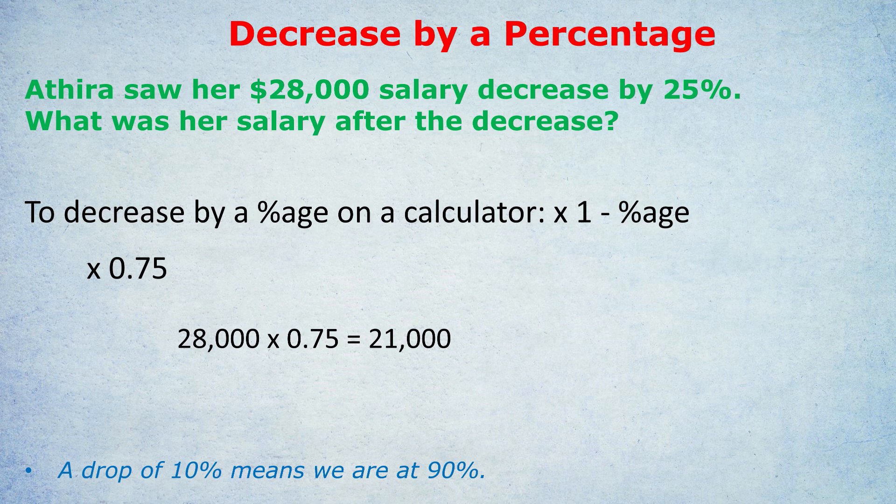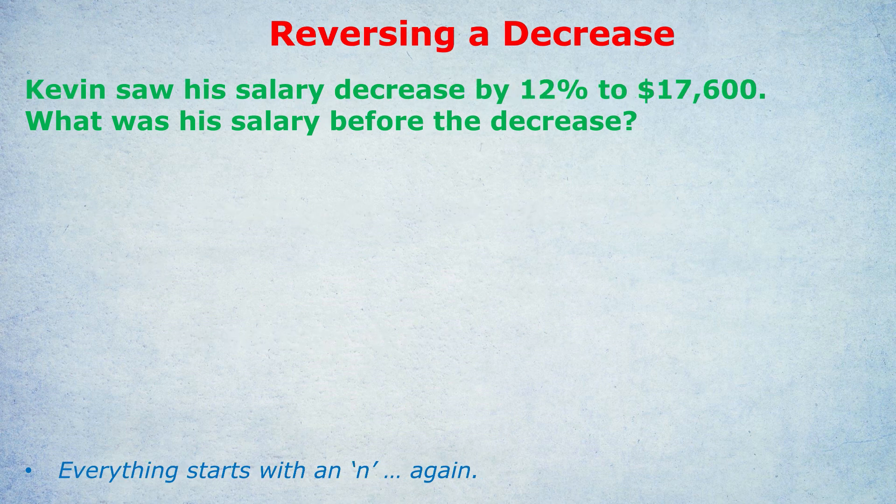In this example, to decrease her $28,000 salary by 25%, we multiply 28,000 by 0.75, giving us $21,000. Now let's try to reverse a decrease using the same trick. Kevin saw his salary decrease by 12% to $17,600. What was his salary before the decrease? We're trying to go back to an original amount, and this is where setting up the equation comes in.